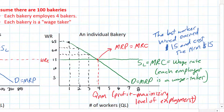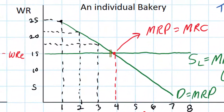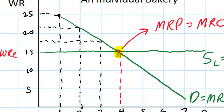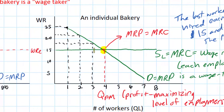The fourth worker costs the firm — zooming in — the marginal resource cost, the cost of hiring the fourth worker, was equal to the marginal revenue product. The firm actually breaks even by hiring the fourth worker. Since the firm is interested in maximizing its profits, it's going to hire workers up to the point where it breaks even on the last worker hired.